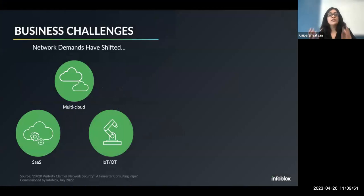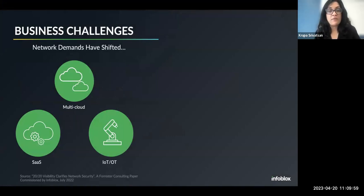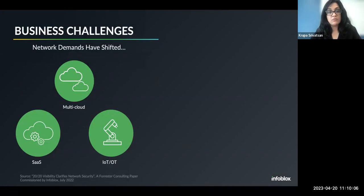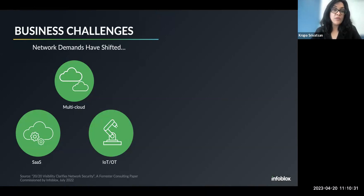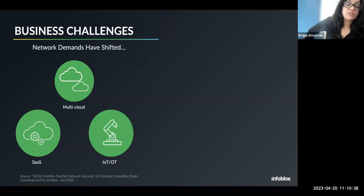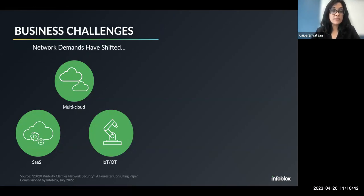I don't need to enumerate all the challenges that organizations face in today's complex world. There are a lot of things happening from a network perspective that add to the complexity. A lot of organizations are moving their workloads to the cloud or adopting multi-cloud or hybrid cloud environments — some applications and workloads still on premises, some in the cloud — for availability reasons and all the benefits a cloud environment provides. On top of that, SaaS has been a big trend, with more and more applications being delivered as a SaaS service. We are no longer behind VPN firewalls.